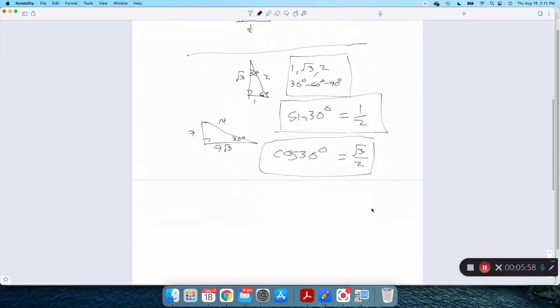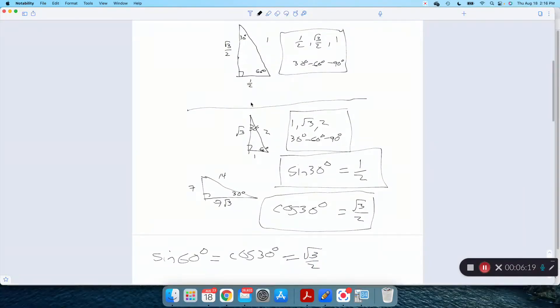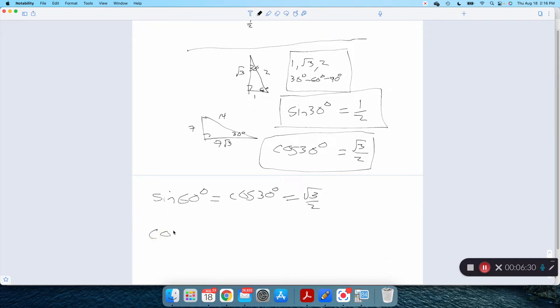Okay, what about the 60s? A couple of different ways I could think about it. If I want sine of 60 degrees, sine and cosine are co-functions. Sine of 60 has to be equal to cosine of the other angle, 30. It has to be, because they're co-functions. Or, I can just use my triangle. Sine of 60 will be opposite over hypotenuse.